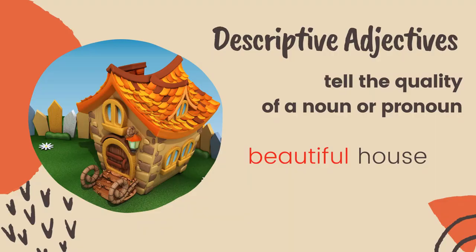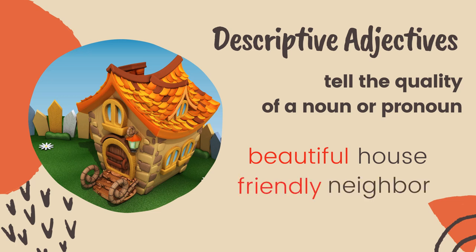For example, 'beautiful house' — beautiful is a descriptive adjective that tells the quality of the house. Another example: 'friendly neighbor' — friendly is an adjective used to describe the noun neighbor.